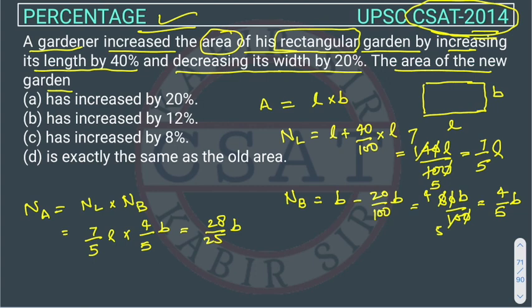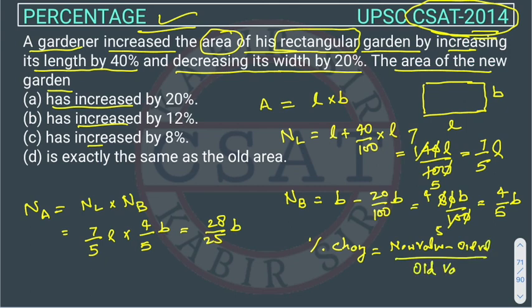What is he asking? He's asking whether the area of the new garden increased or decreased. So we have to find the percentage change. We know the formula of percentage change is: new value minus old value upon old value into 100.